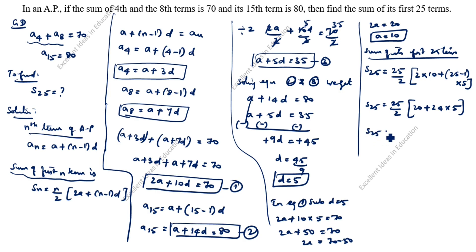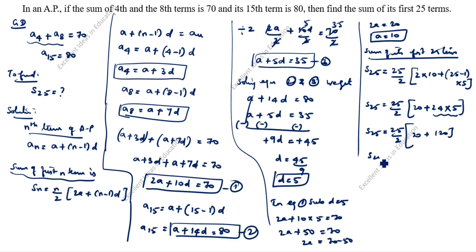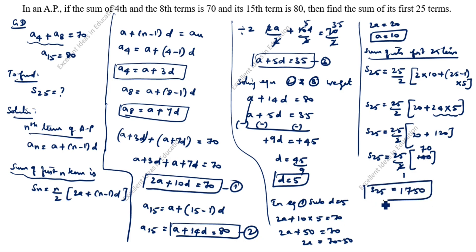Using BODMAS, we first multiply: 24 into 5 is 120. So S25 equals 25 by 2 times (20 plus 120), which is 25 by 2 times 140. This gives 25 into 70, which equals 1750. Therefore, the sum of the first 25 terms is 1750.